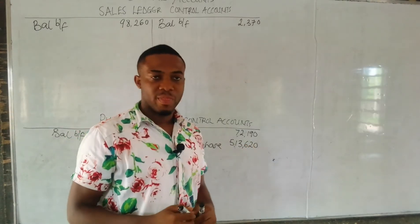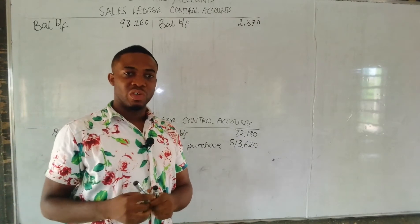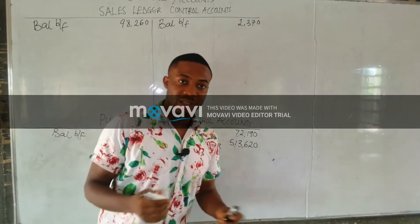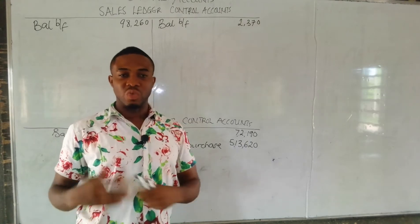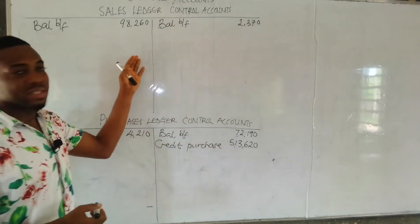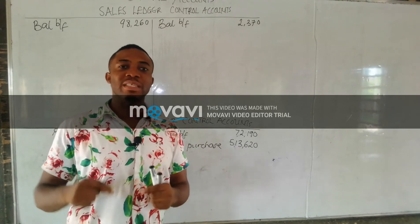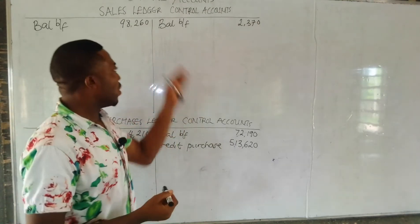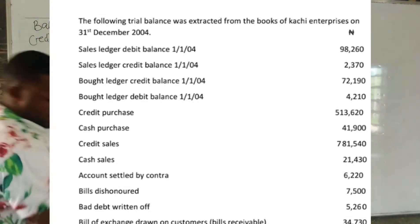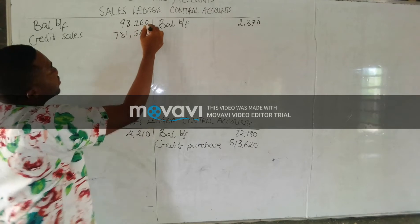Cash purchases will not come to the control account — they go to the cash book. This is often a trick by the examiner to test your understanding. Next is credit sales: since customers bought on credit and did not pay, this increases their existing debt, so credit sales of $1,503 are posted to the debit side of the sales ledger.